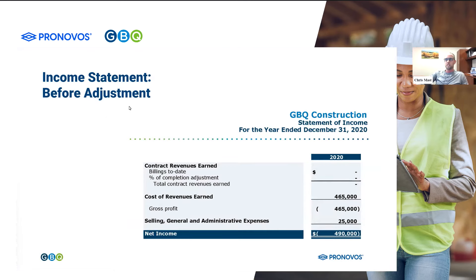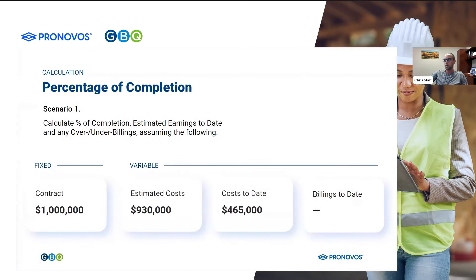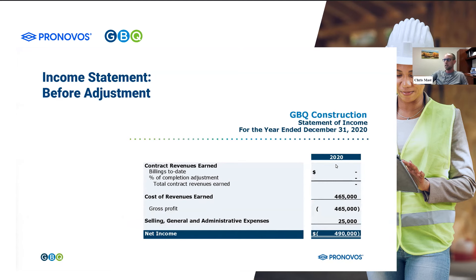So what your income statement is going to look like before you do a percentage completion adjustment is it's going to look like you have no revenue, because in our example we've billed nothing. So nothing has run through the accounting system — it looks like we've earned nothing. But we've got $465,000 of actual cost. So if you sent this to the bank or to your owner, it's going to look like you're about to go bankrupt. This is why it's important that we're not keeping financial statements based on billings.